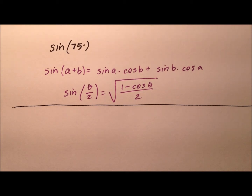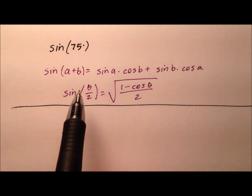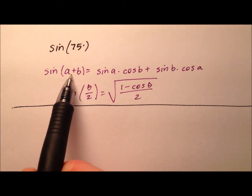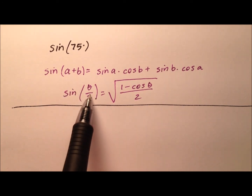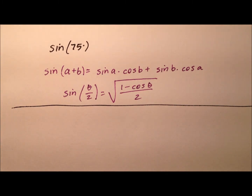In this video, I want to walk through and show you how to find the exact value for the sine of 75 degrees, and we're going to do it two different ways. The first way is going to use the sum identity for sine, and then we'll use the half angle identity for sine. I'll show you that they come out to be the same.